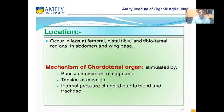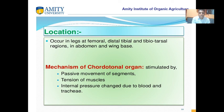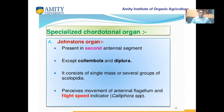The location of cordotonal sensilla is near the femoral region, distal tibia, antibiotarsal regions, abdomen, and wing bases. The mechanism of cordotonal organs: they are stimulated by passive movement of segments, tension of muscles, and internal pressure changes due to blood (hemolymph) and trachea. Muscle tensions and passive segment movement play an important role in cordotonal organs.